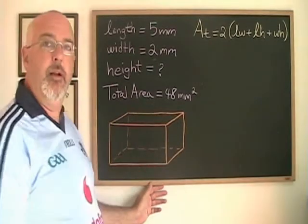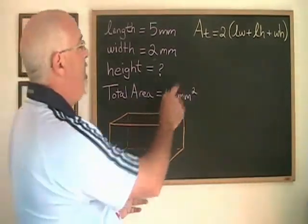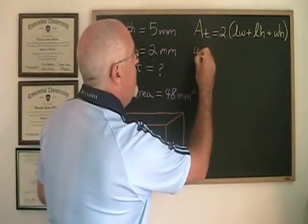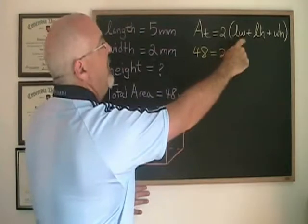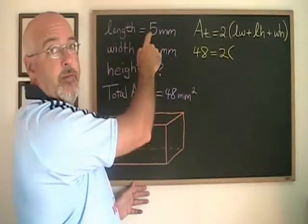Plugging the numbers that I am given into the formula, 48 goes in the AT position. LW is length times width which is 5 times 2.